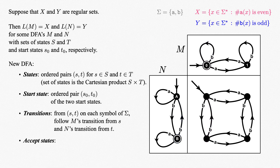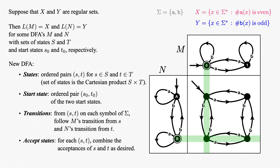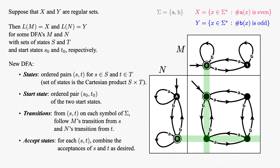Filling in the rest of our transitions similarly gives us the shape of our new DFA. Finally, which states should be marked as accept states? Each pair (s, t) has one state from m and one from n, either or both of which could be accept states. For a DFA accepting the union of x and y, we define the pair to be an accept state if either s or t is an accept state, or both. For a DFA accepting the intersection of x and y, we define the pair to be an accept state just when both s and t are accept states. We could even arrange the set difference x minus y or the symmetric difference of x and y if we assign the accept states appropriately.